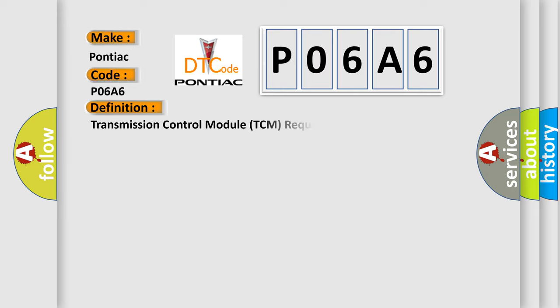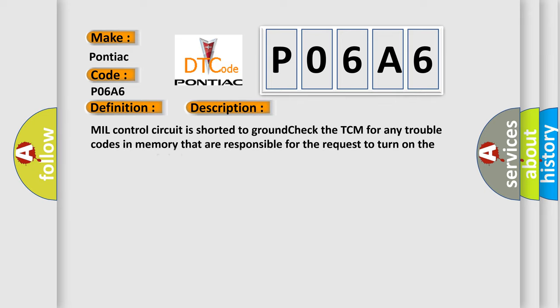The basic definition is transmission control module TCM requested MIL illumination. And now this is a short description of this DTC code: MIL control circuit is shorted to ground. Check the TCM for any trouble codes in memory that are responsible for the request to turn on the MIL. TCM has failed.